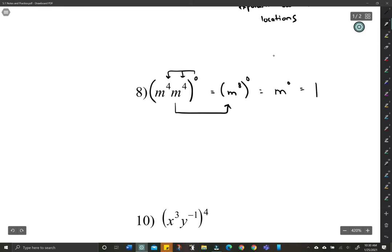We could have also thought of it as m to the 0 times m to the 0, which is just 1 times 1. Regardless, you get 1. So different ways to look at that one. But if we're going to have that 0 out there, it's just going to distribute through.